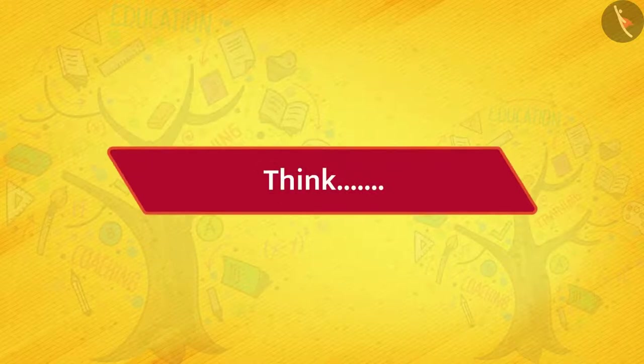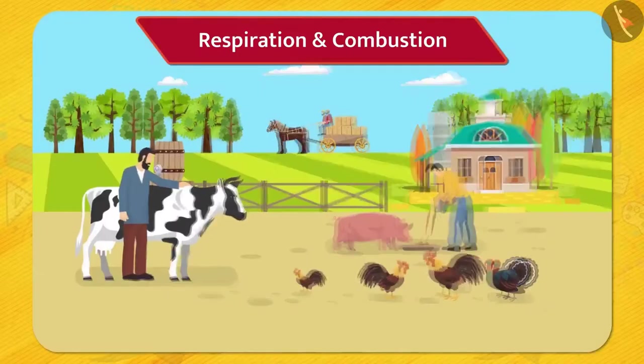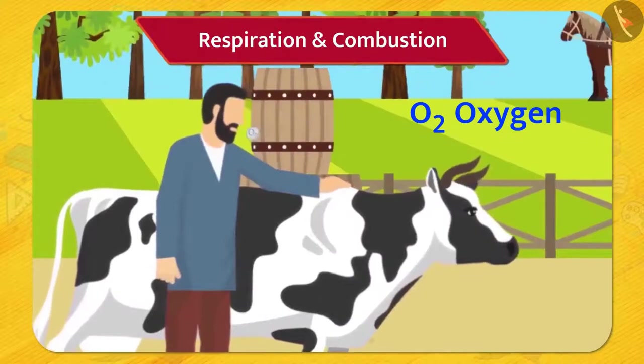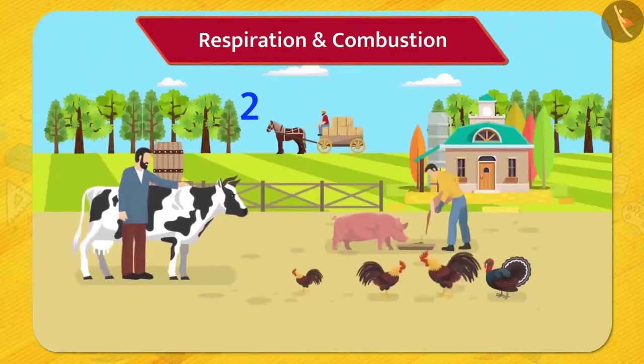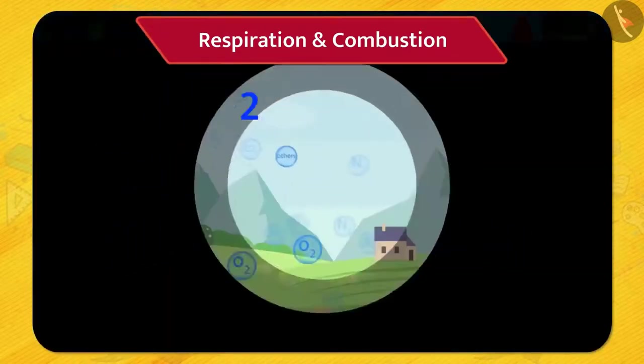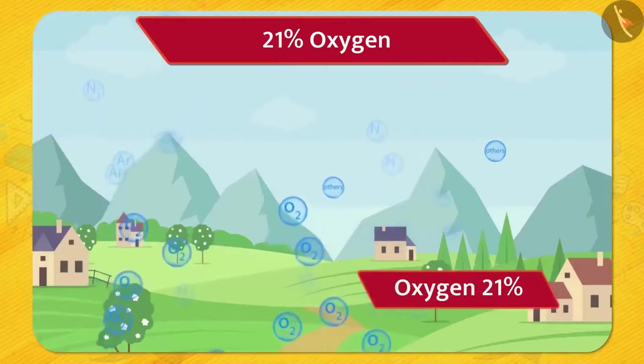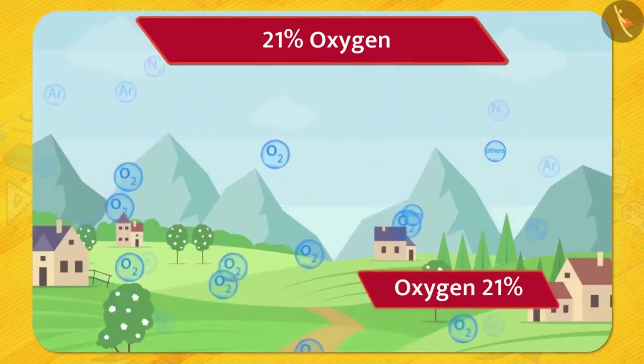Think. Impossible. We cannot live few minutes without it. Oxygen is necessary for the respiration of living beings, and it is also necessary for combustion. Around 21 percent of the atmosphere is oxygen, and it's almost constant. Let us see how the amount of oxygen remains constant in the atmosphere.